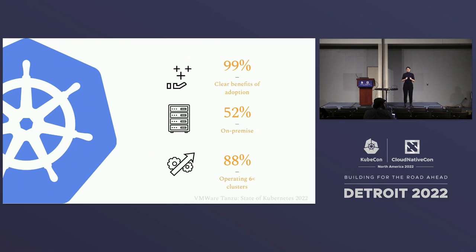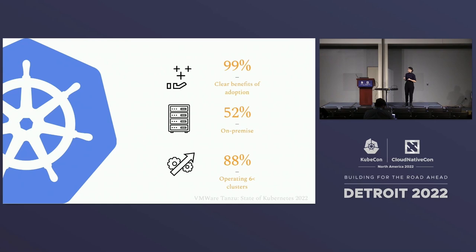This number is actually declining from last year — it was 55%, this year it's 52%. We see this very slow declining trend. However, this does not dismiss the fact that more than half of these organizations still need to deploy their infrastructure on-prem.